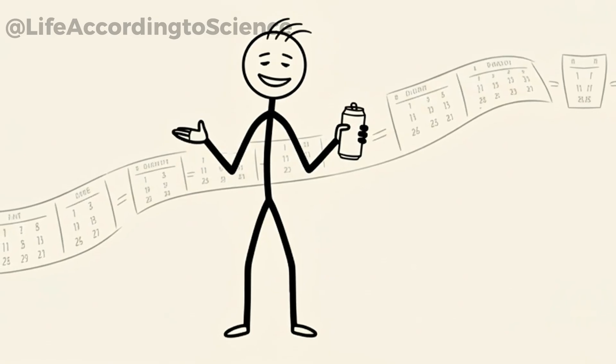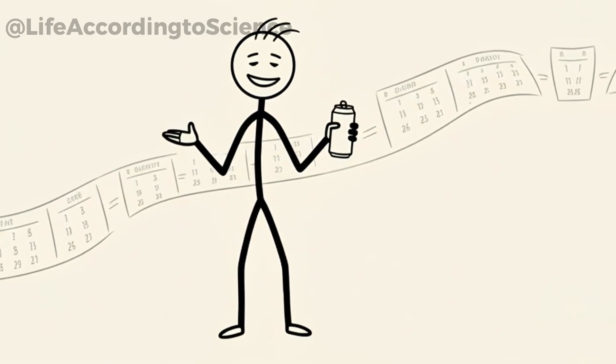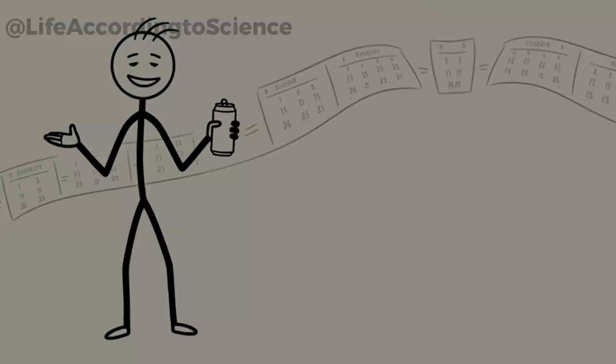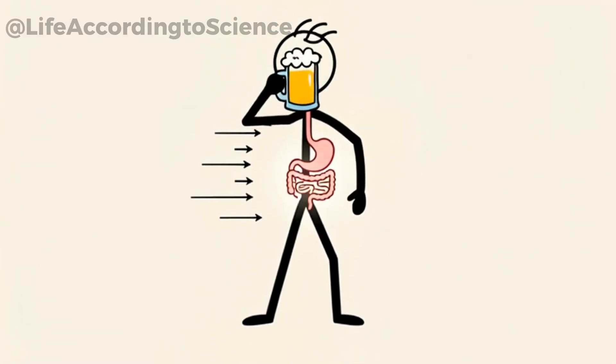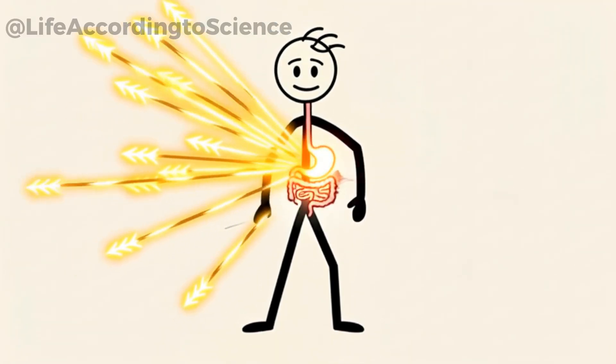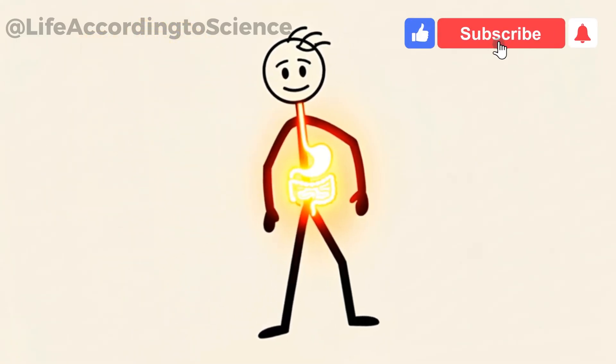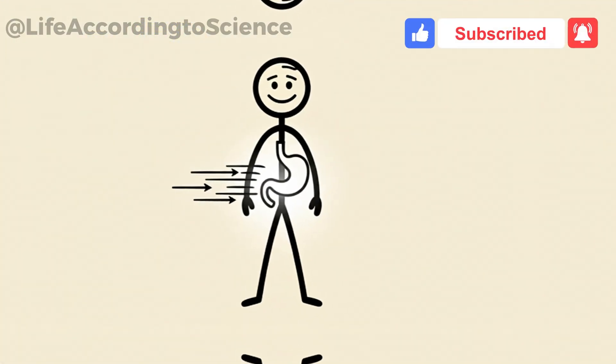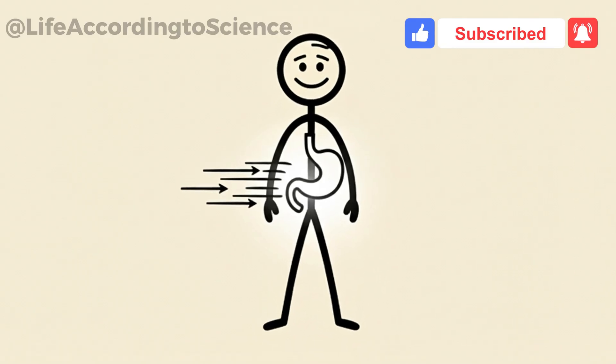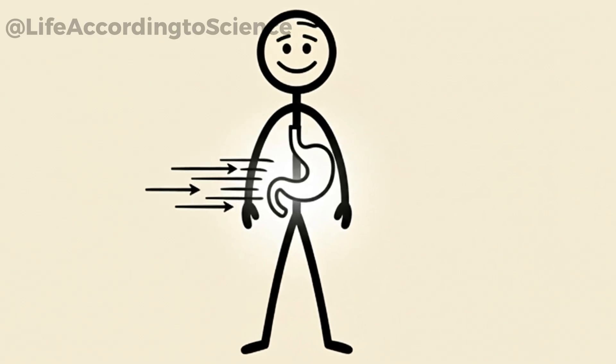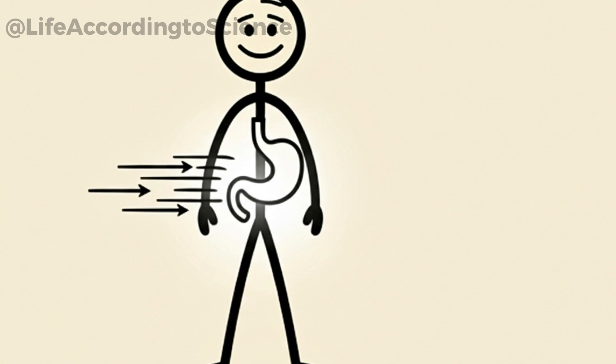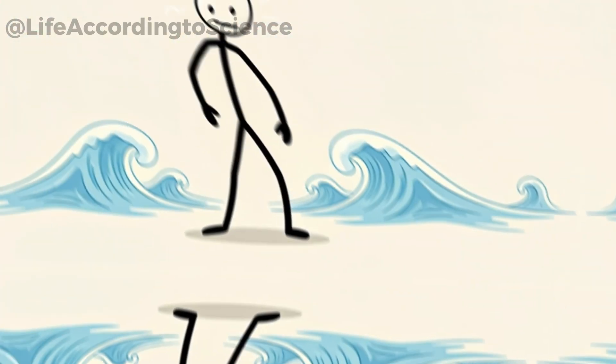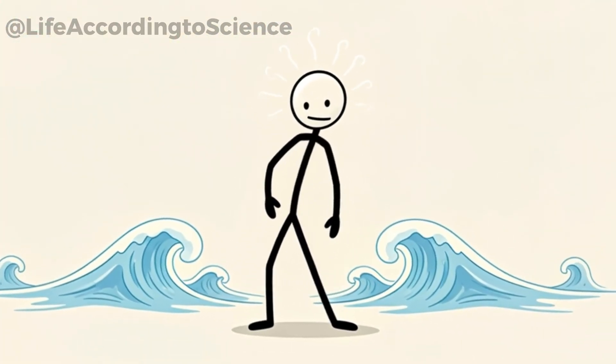But science shows that the story changes rapidly when that one beer becomes a daily habit. Right after finishing a beer, your digestive system prioritizes alcohol metabolism. Unlike nutrients, alcohol doesn't need digestion. It gets absorbed almost instantly through the stomach lining and small intestine. This is why the buzz kicks in faster than food ever could.